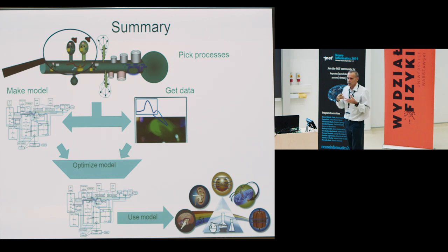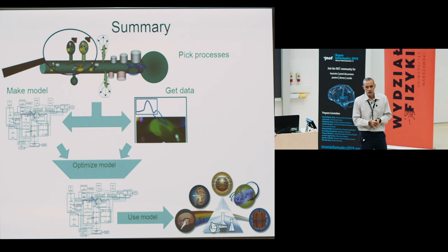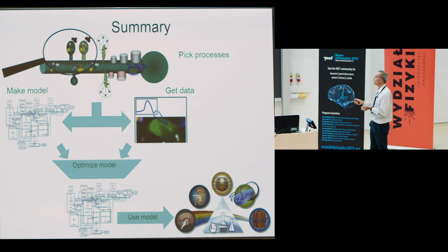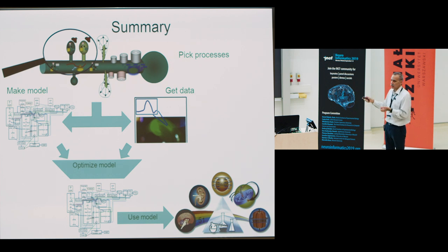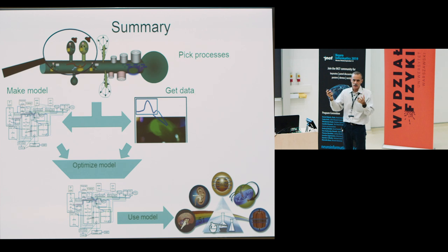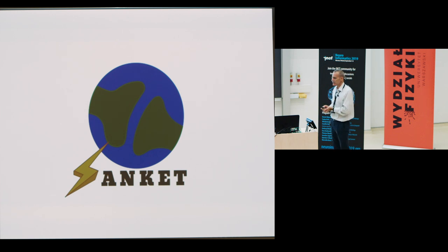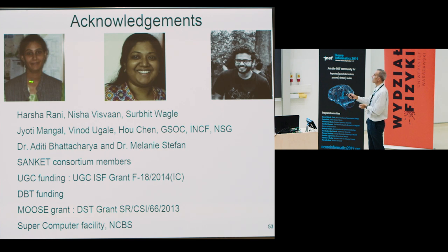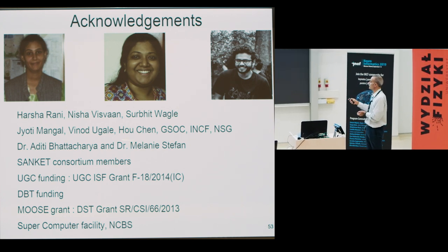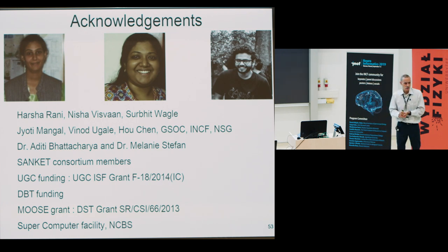To wrap up, I've described the workflow developed for this consortium project: it starts with picking a system of interest, developing a model closely based on relevant data, then using a whole workflow to take available data, structure it, and use it in a systematic and principled way to make a better model. Finally, it's up to the people in the project to figure out what they want to do with it. I especially want to thank Harsha, Nisha, and Surbit, who have been core to the project, as well as the various collaborators, consortium members, and funders.